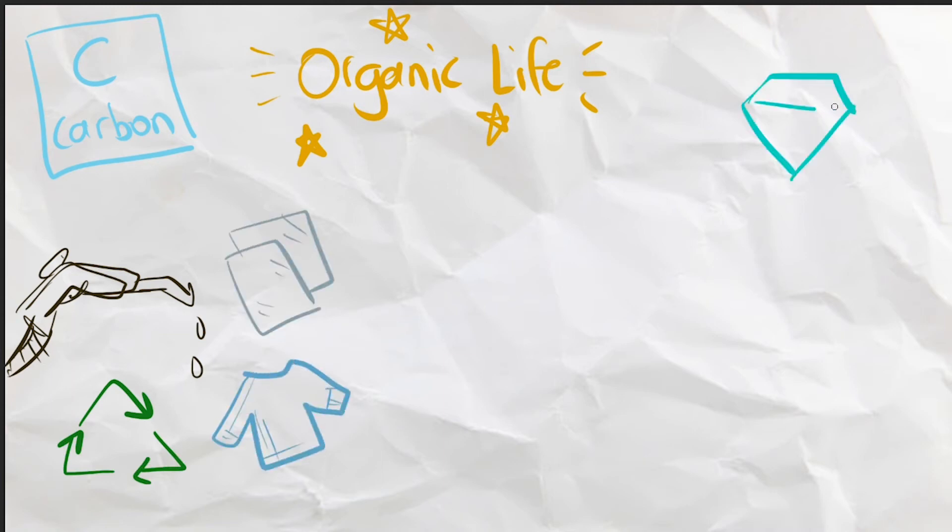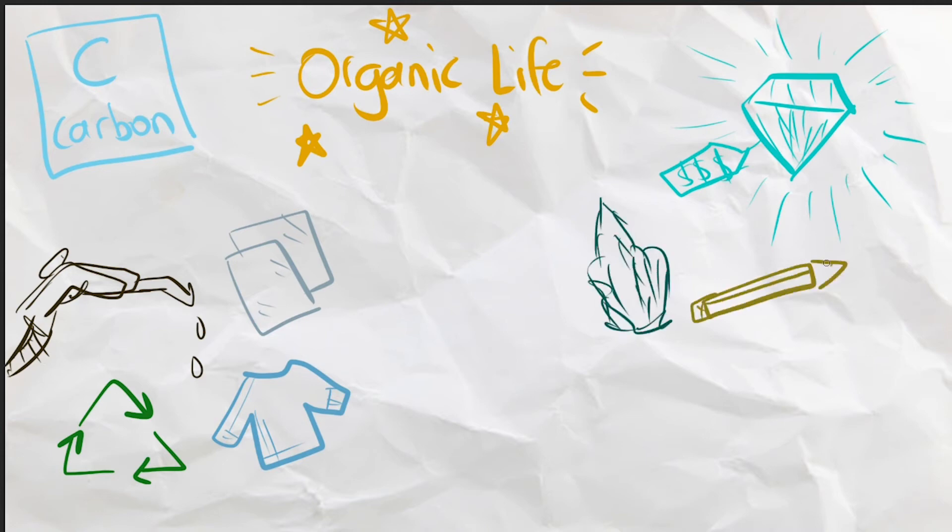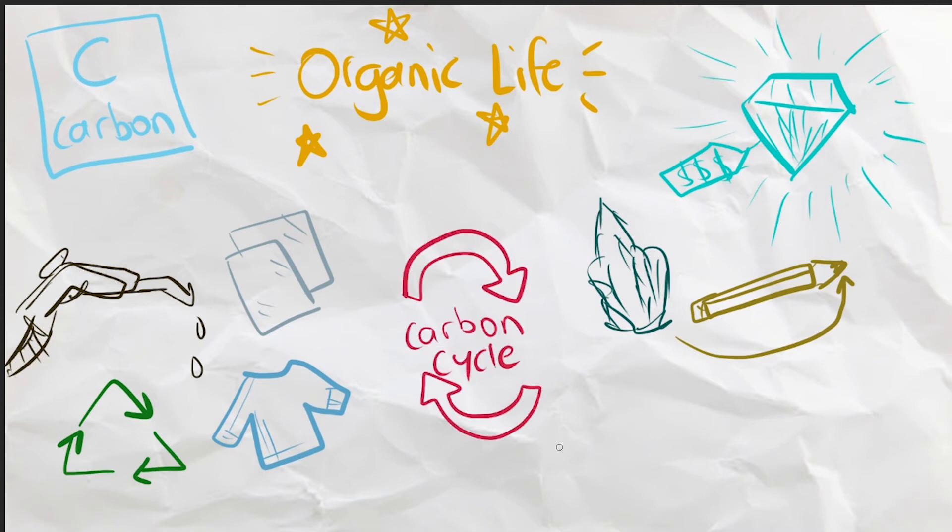Probably the most well-known forms of carbon are diamonds, which are used in industrial drills or sold at high prices, and graphite, which are commonly used in pencils. Carbon also contributes to climate change in the carbon cycle, which I made a video on. And lastly, carbon nanotubes are a recent invention that can revolutionize our technologies, being extremely light, tough, and excellent conductors.